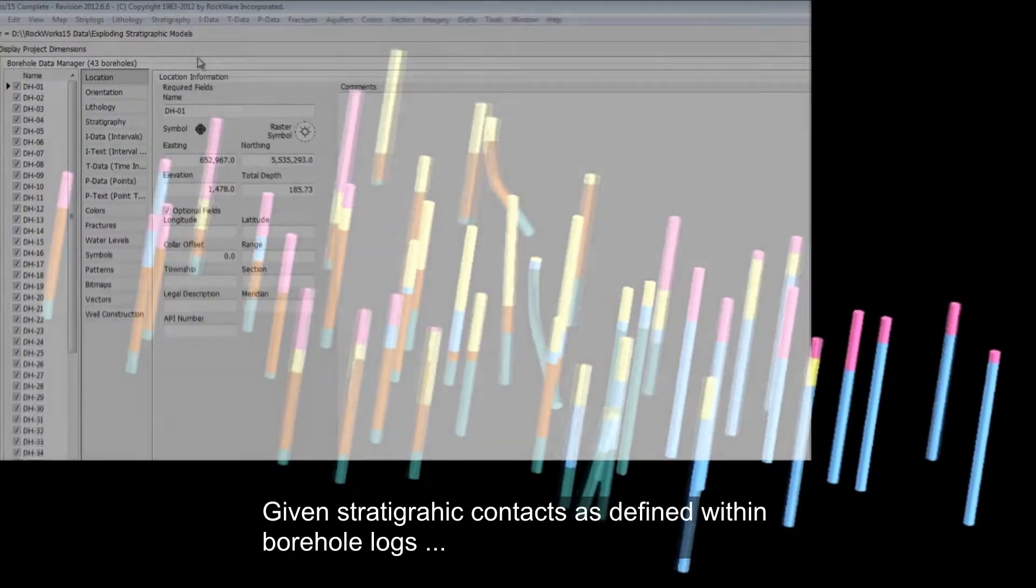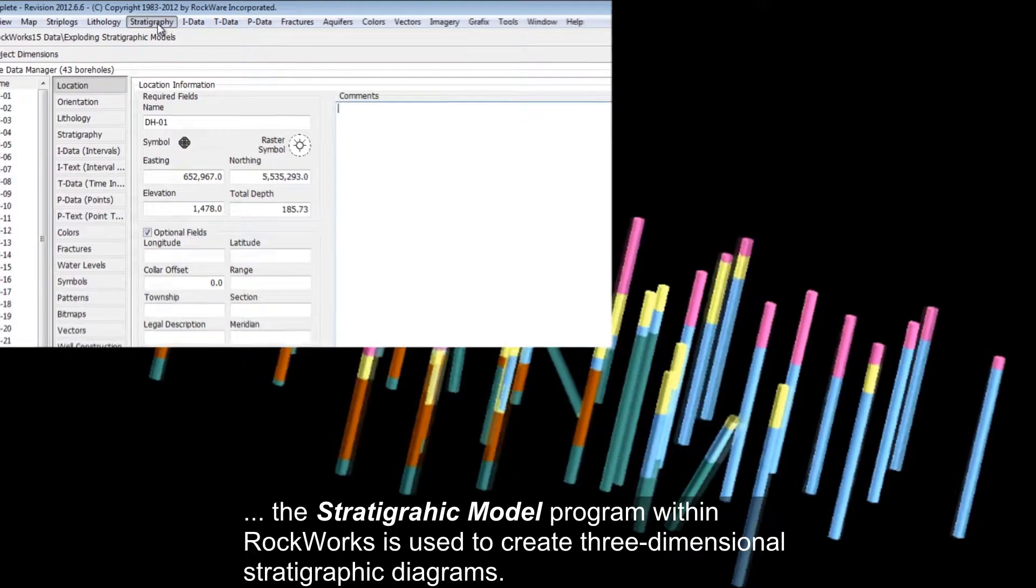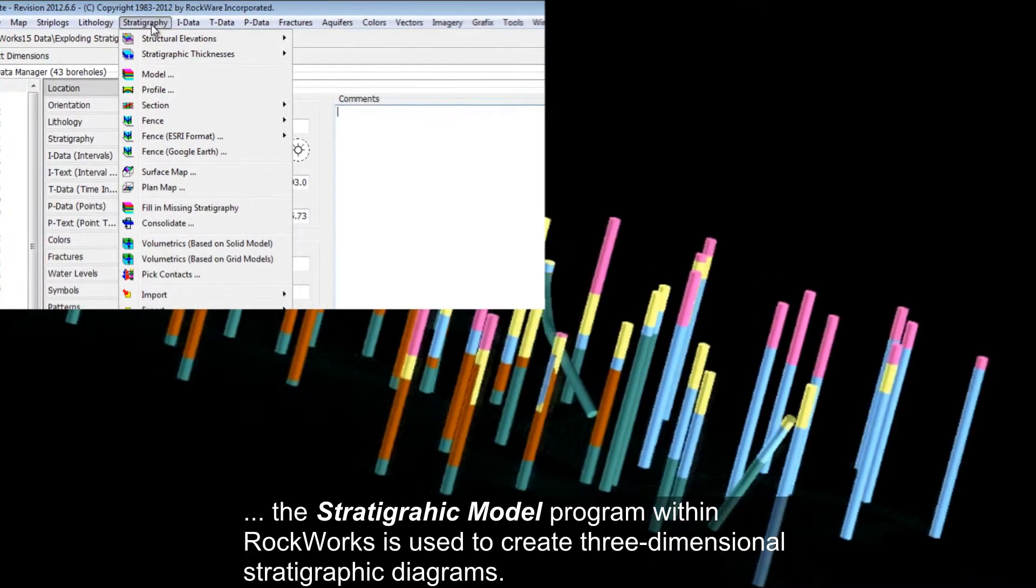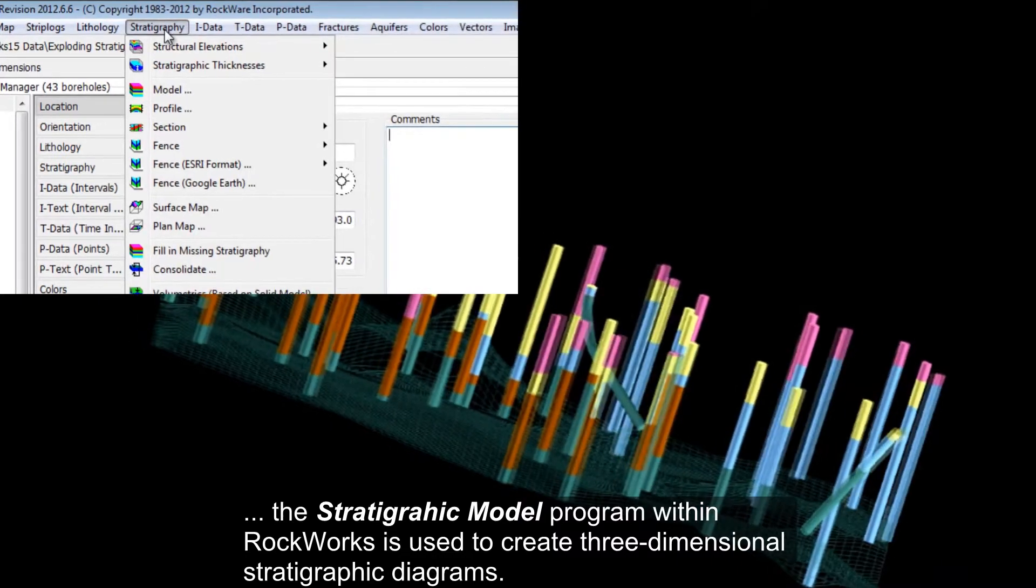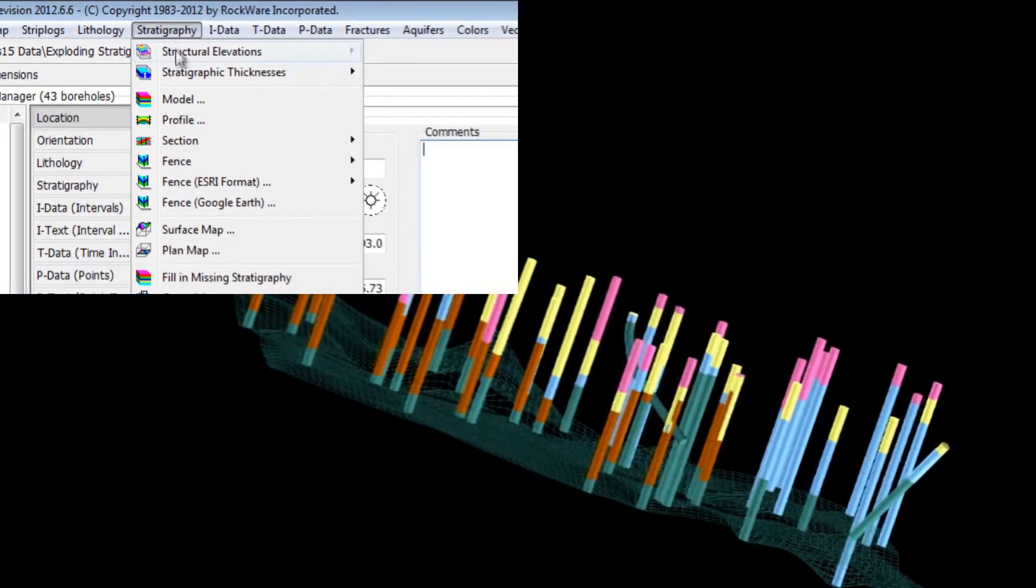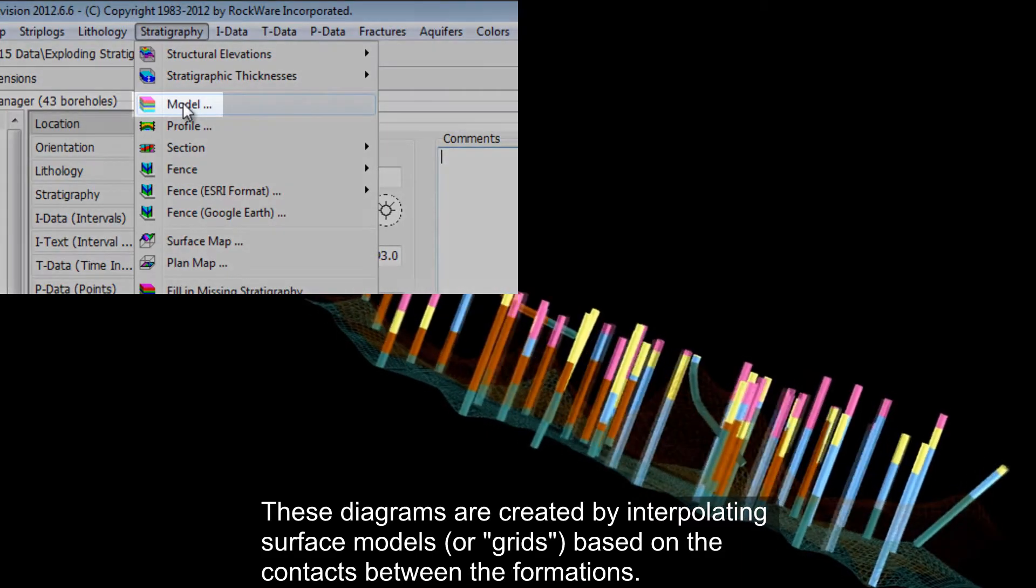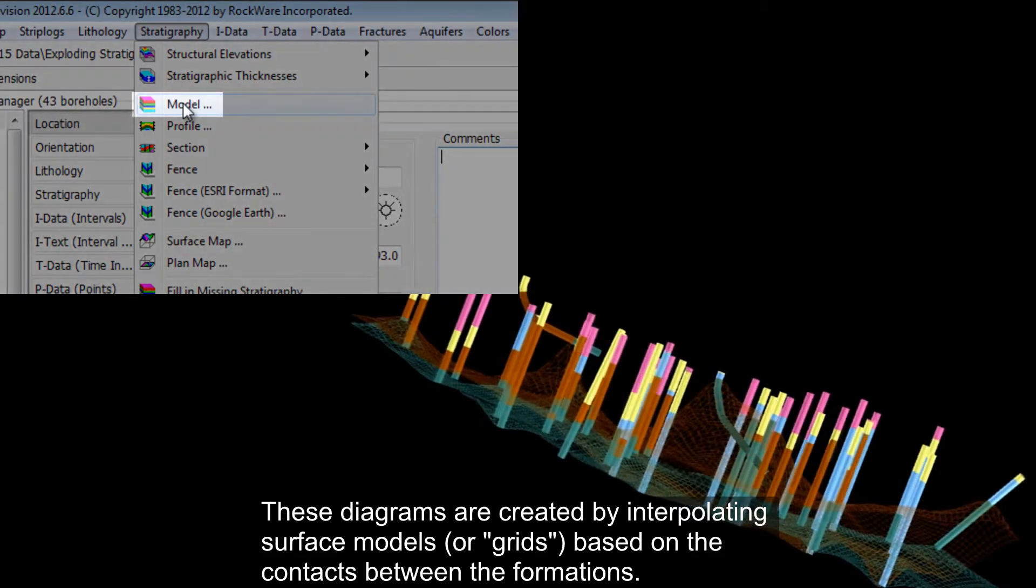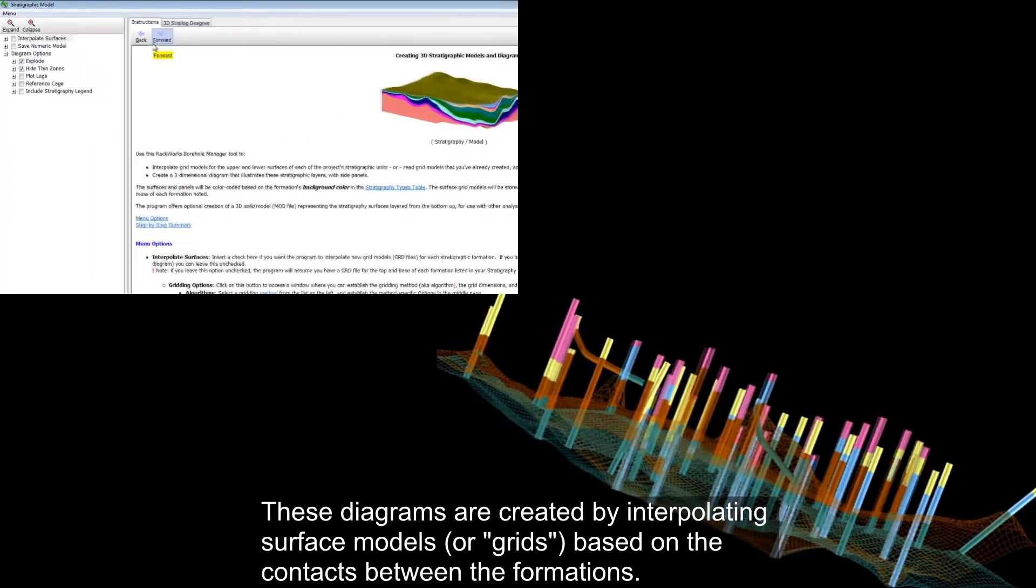Given stratigraphic contexts as defined within borehole logs, the stratigraphic model program within RockWorks is used to create three-dimensional stratigraphic diagrams. These diagrams are created by interpolating surface models or grids based on the contacts between the formations.